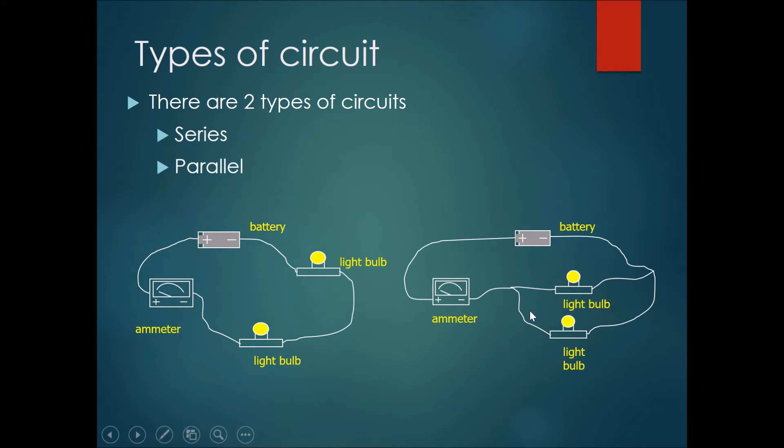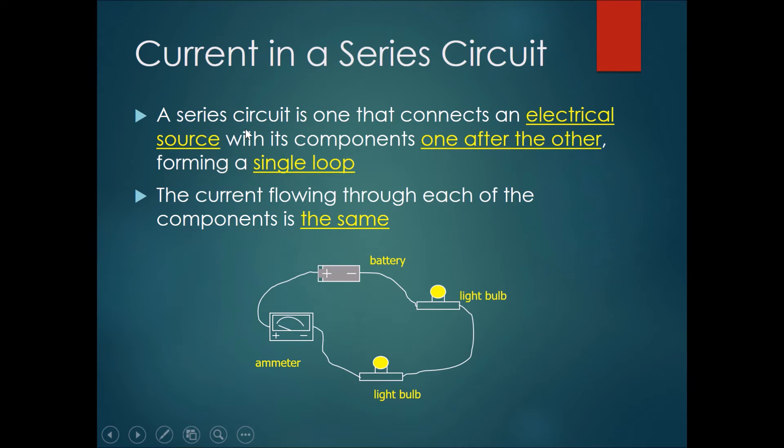The current would still go through each one, therefore lighting up both the light bulbs as well. And then when they reach this point they can join back and then go back to the battery. So in summary, a series circuit is one that connects an electrical source